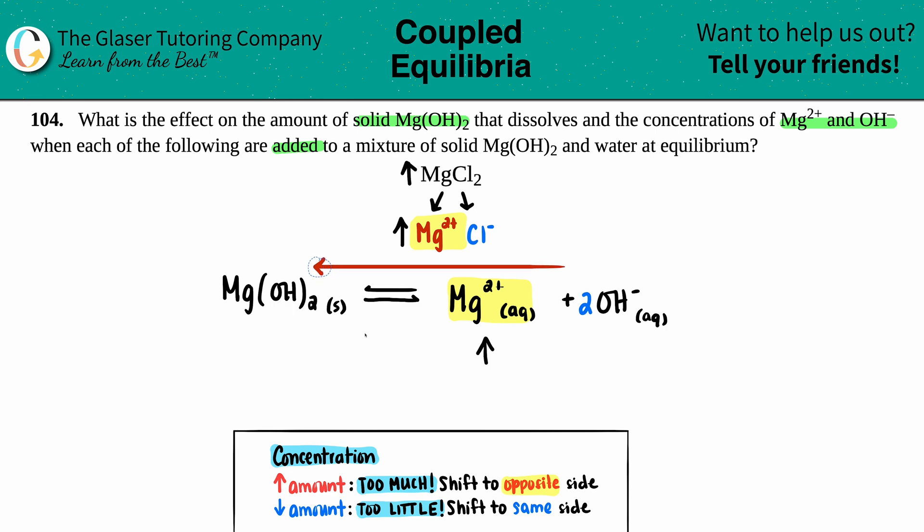And since you're favoring that direction, you're going to produce more. So the Mg(OH)2 is going to increase because you're going that direction. And if that's the case, what's happening to the OH-? Yeah, that's dropping.